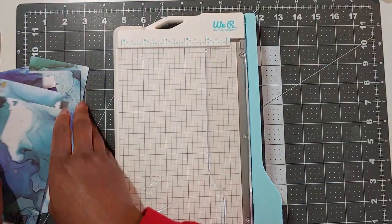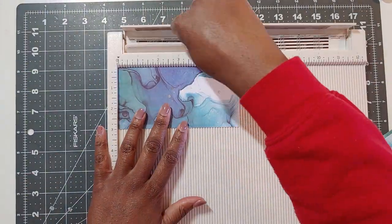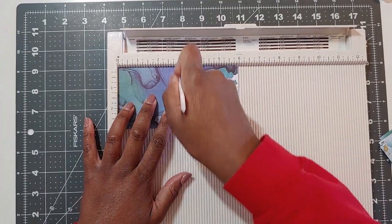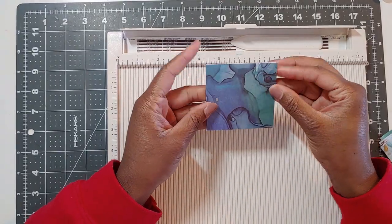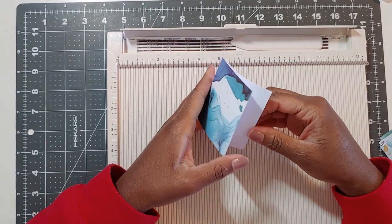You'll notice I switched paper trimmers that's just because I need to replace the blade on the rotary trimmer. So now I'm just taking that pattern paper and scoring it in half at three inches to give me a three by three card.